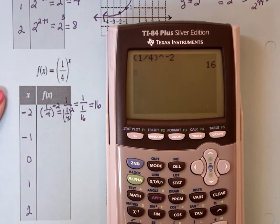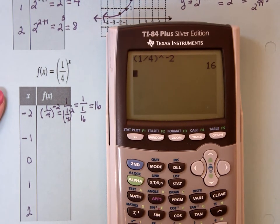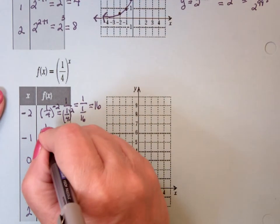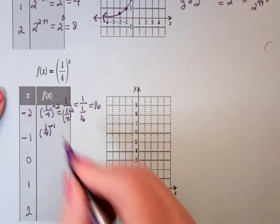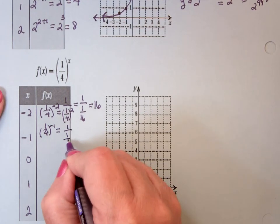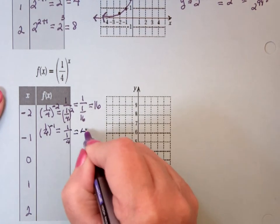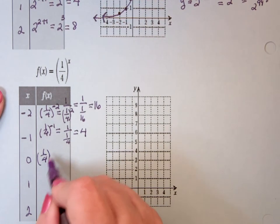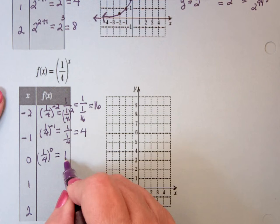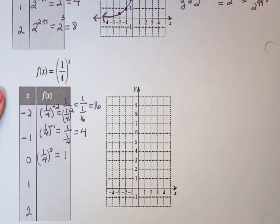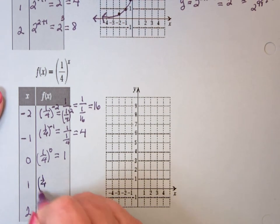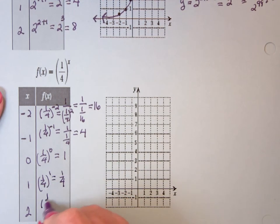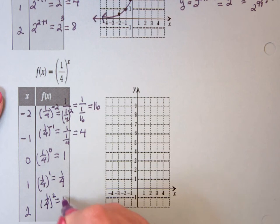I'm just calculating out numbers. So 1 fourth to the negative 1 is 1 over 1 fourth. Invert and multiply, you get 4. And 1 fourth to the 0 power, anything to the 0 power except 0 is 1. 1 fourth to the 1 power is 1 fourth. 1 fourth to the 2 power is 1 over 16.